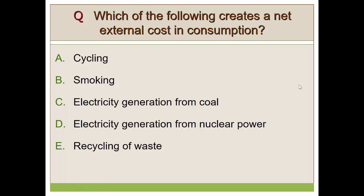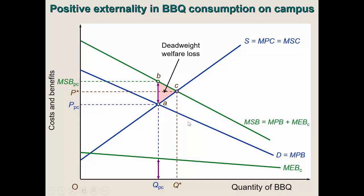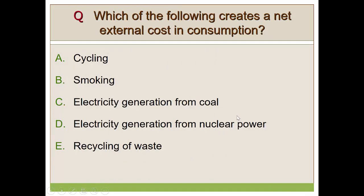Those are the four cases — we looked at different scenarios with examples and how the socially optimal point is determined. The socially optimal point is where MSC equals MSB — marginal social cost equals marginal social benefit — if we internalize externalities. A quick final quiz: which of the following creates a net external cost in consumption? The answer is smoking — the next lecture will cover public goods.